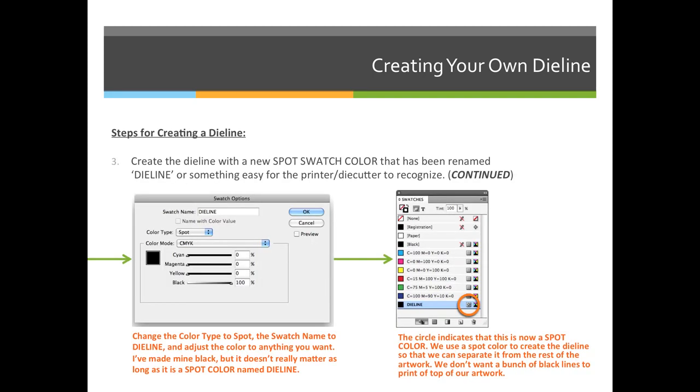But basically what happens is if we look at our swatches panel, I have all these colors and they're all going to be made of cyan, magenta, yellow, and black. Those are the printing process colors. So no matter what I create, I can print it with cyan, magenta, yellow, and black. I can have cyan and yellow to make orange and different things like that.